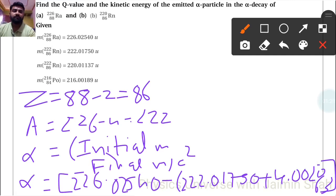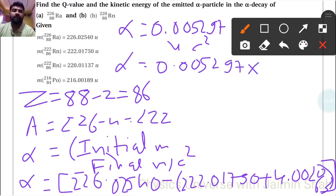This calculation equals 0.005297 U times C squared. Converting using 931.5 MeV per U, we get 0.005297 times 931.5 MeV.